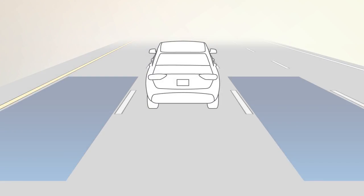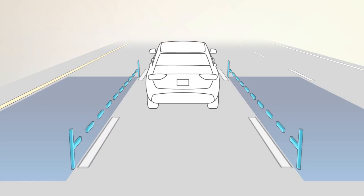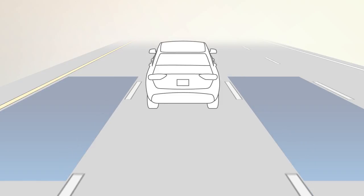The BSM Detection Zone covers about one lane on either side of you. The zone starts at each outside mirror and extends back toward the rear. The system activates when your speed reaches about 6 miles per hour or 10 kilometers per hour.